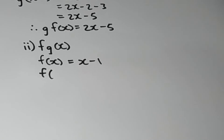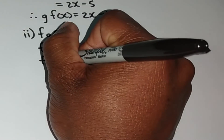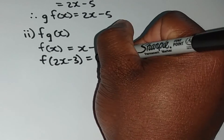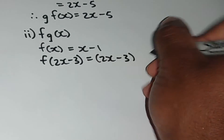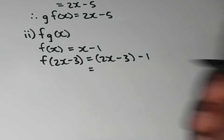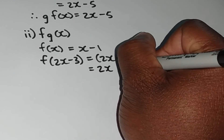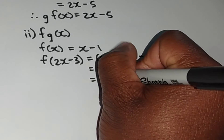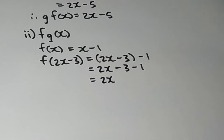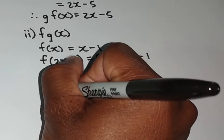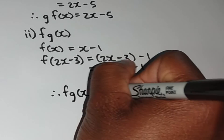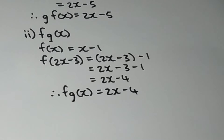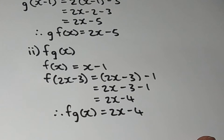So we're going to replace the x here with 2x minus 3. Wherever we see x in this function, we replace it with 2x minus 3, and we still have the minus 1 out here. Getting rid of the parentheses, we're left with 2x minus 3 minus 1. Simplifying, negative 3 minus 1 is minus 4. Therefore, f of g of x is equal to 2x minus 4. That's pretty much how we treat the problems given in example 1.